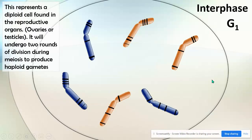In G1, the cell lives its life. But if you recall, in S phase — actually, before we go into S phase — this cell here is 2N equals 6. If it were a human cell, it would be 2N equals 46.